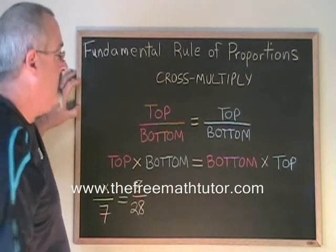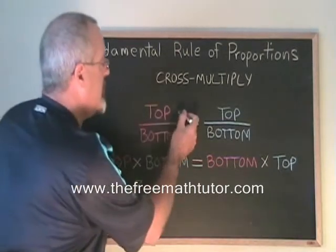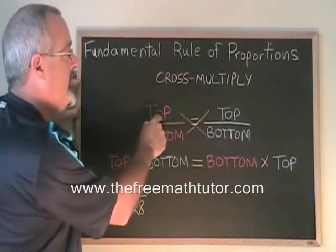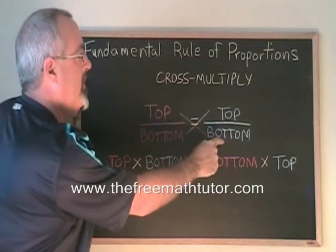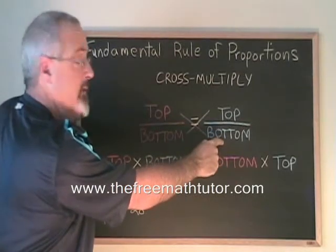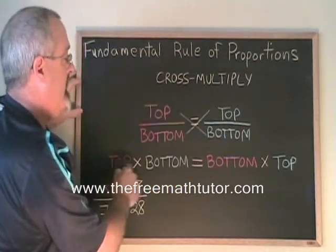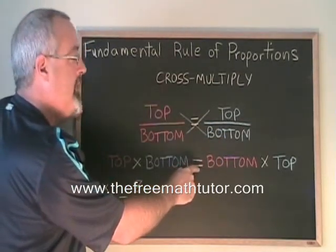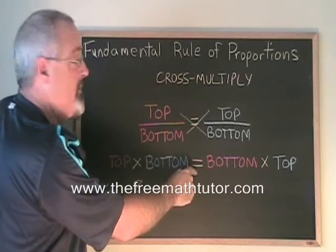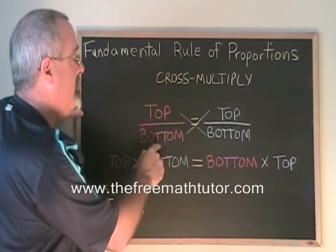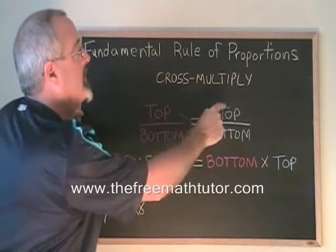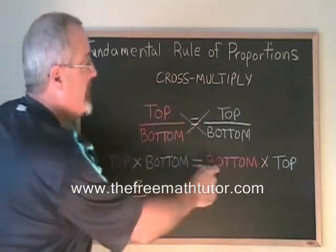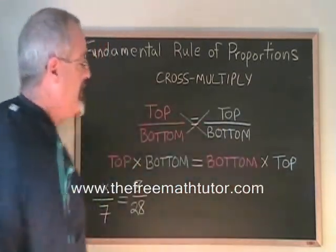Cross multiply means we multiply the top of one side by the bottom of the other and write it like this, and then that's equal to the bottom of the first side times the top of the other. We write it like that.